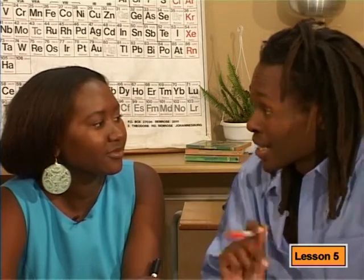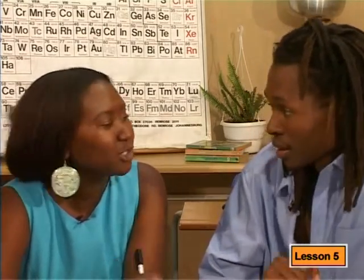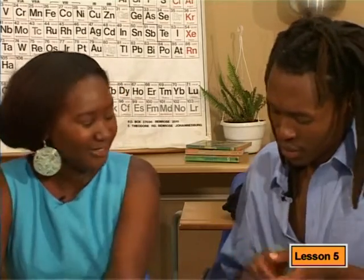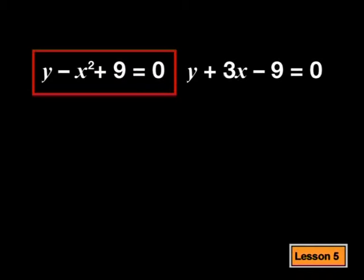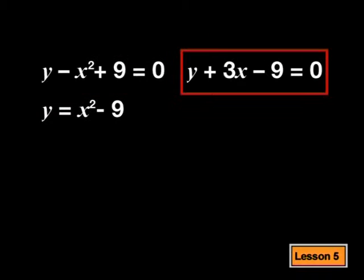Can you tell me what our first step would be? Well, to start off with, we need to write the equation with y as the subject of the equation. Why don't you go ahead and do that? Okay, that's pretty easy. To isolate the y in the first equation, I need to move the x squared and the 9 to the other side of the equal sign. So that gives me y equals x squared minus 9. For the second equation, I need to move the 3x and the minus 9. When I do that, I get y equals minus 3x plus 9.